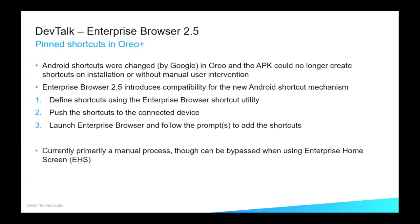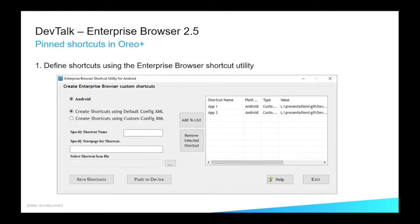A shortcut in terms of Enterprise Browser is the ability to have an icon in the launcher, which you can put onto the homepage of your Android device. When you click that icon, it will take you to a specific URL within Enterprise Browser. So you get the Enterprise Browser experience without having to always have the URL statically defined in the default config.xml file. There's a separate tool to do this. This is primarily a manual process that I'm demonstrating. If you read the tech docs, it does talk about how you would mass deploy these shortcuts.